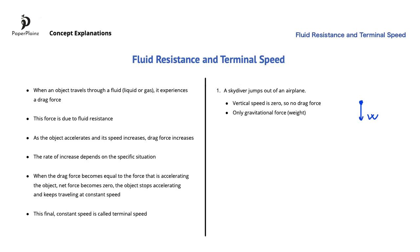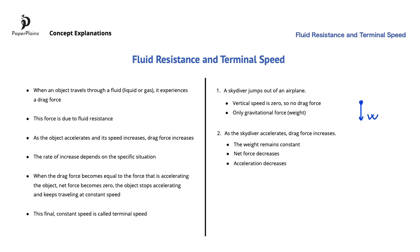As the skydiver falls and starts accelerating downwards, the drag force increases. Since the gravitational force — in other words the weight — remains constant, the net force decreases, hence acceleration also decreases. Note that here the speed of the skydiver is still increasing, but the rate of this increase — in other words the acceleration — is decreasing. The free body diagram here looks like this.